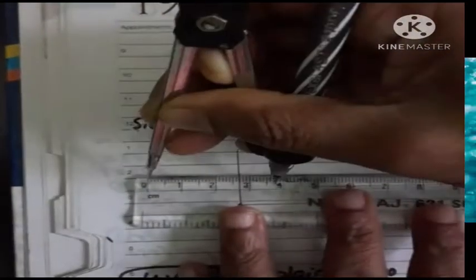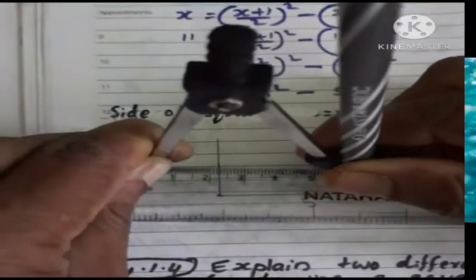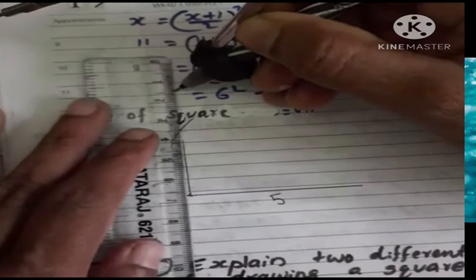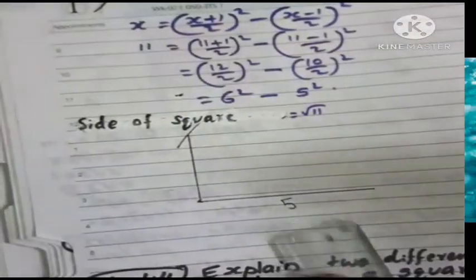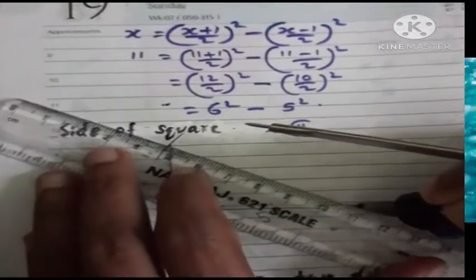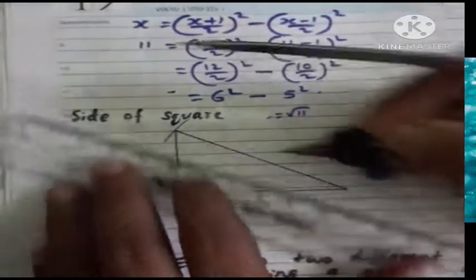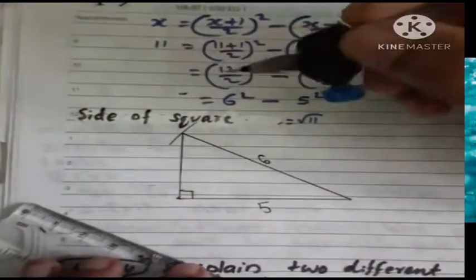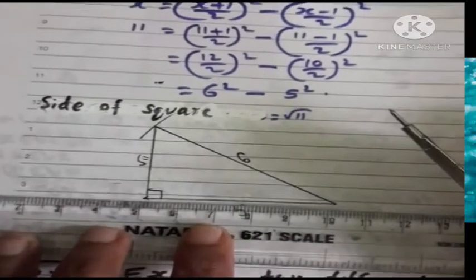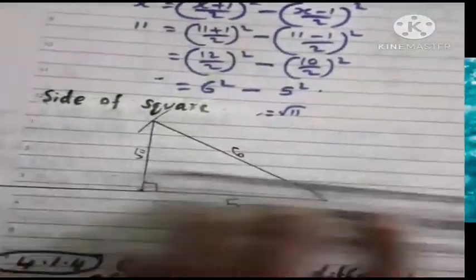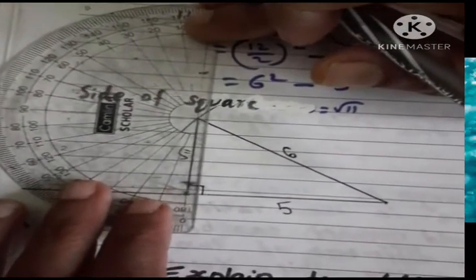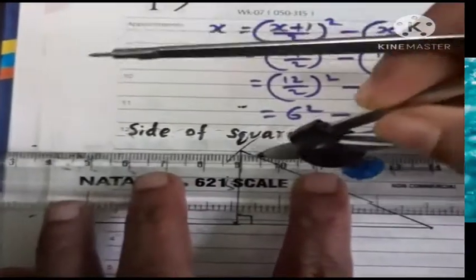The hypotenuse is 6 cm. This side is root 11. This is 90 degrees.